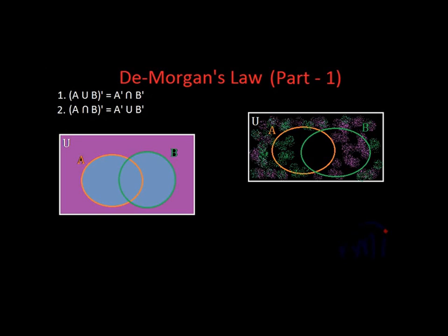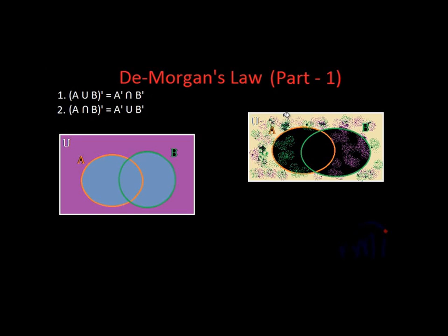That area, if you see properly, is this area — and this is nothing but the area which I had shaded in purple in the first drawing. So from here we can see that the complement of A union B whole is equal to A complement intersection B complement.